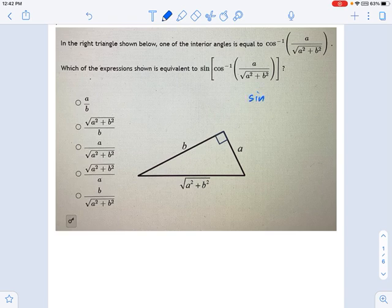But I do want to remind you of the general format of something. Sine of theta equals opposite over hypotenuse, and cosine of theta equals adjacent over hypotenuse.